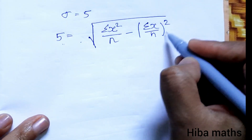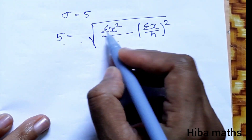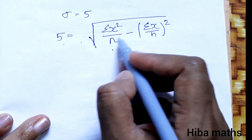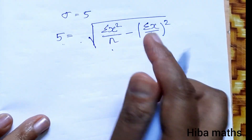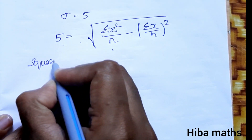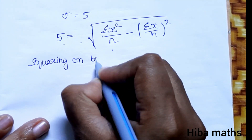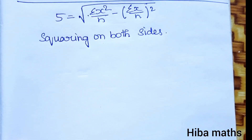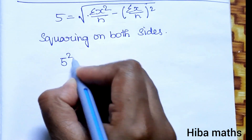Now we need to find the summation of x². Using the standard deviation formula, squaring both sides: standard deviation squared equals summation of x² divided by n, minus the mean squared. Squaring both sides, 5 squared gives us 25 on the left-hand side.